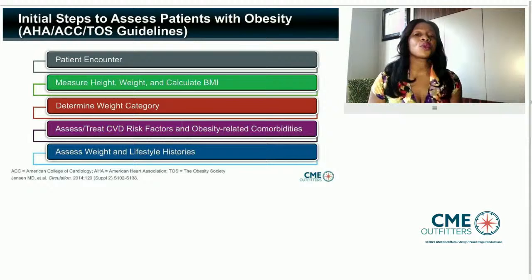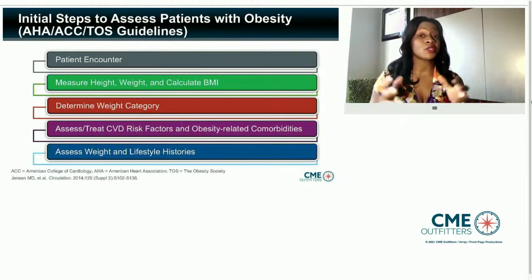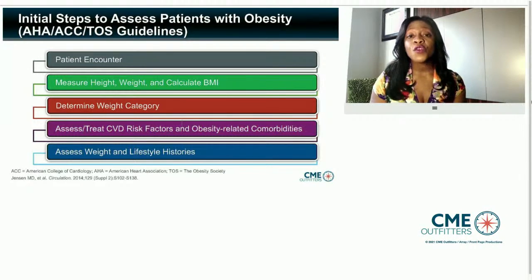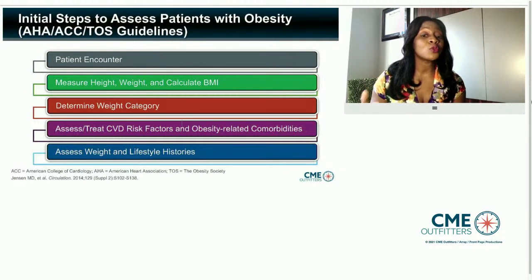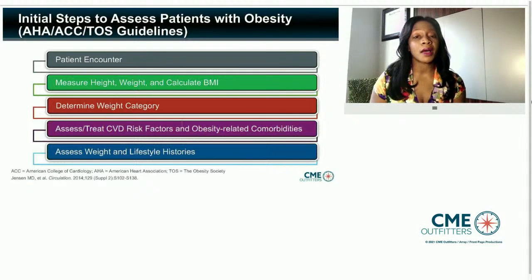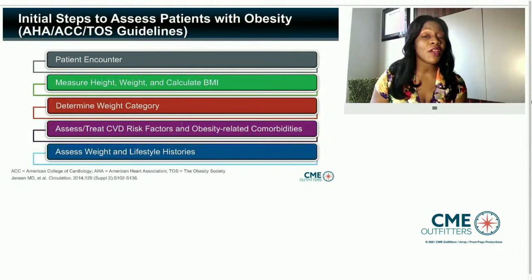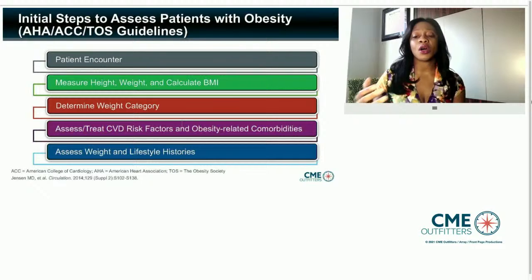Now I want to take you through the key steps from the guidelines of the American Heart Association, American College of Cardiology, and the Obesity Society. First, the patient encounter: measure height, weight, and calculate BMI. We'll determine one's weight category, which has implications for treatment modalities, and we'll assess and treat cardiovascular disease risk factors and obesity-related conditions, as well as assess weight and lifestyle histories.